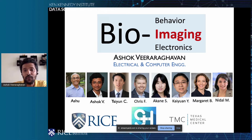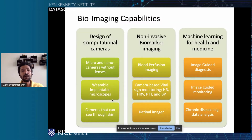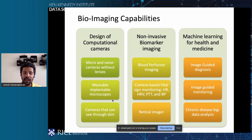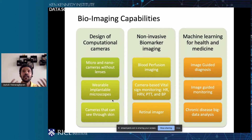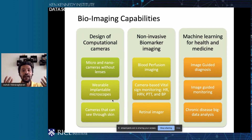The rest of the three minutes will be focused on the imaging applications we are looking at. The bioimaging capabilities that we as a team bring to the table include the design of computational cameras — by this I mean the holistic co-design of optics, sensors, electronics, and machine learning algorithms in order to achieve imaging functionalities, typically bioimaging functionalities, that have application constraints limiting traditional technologies.